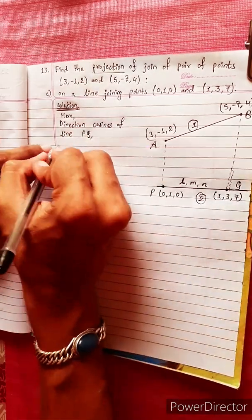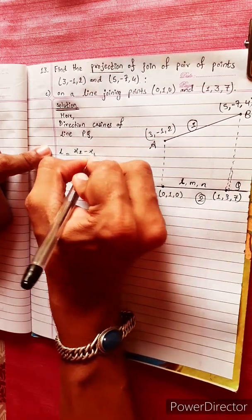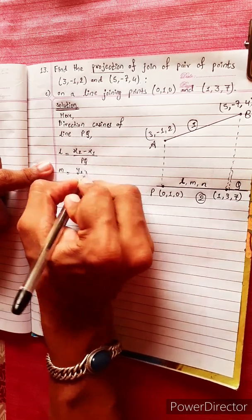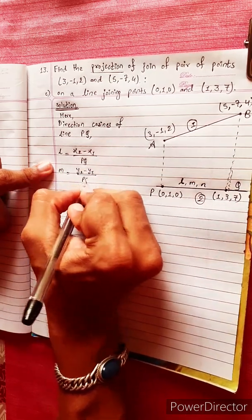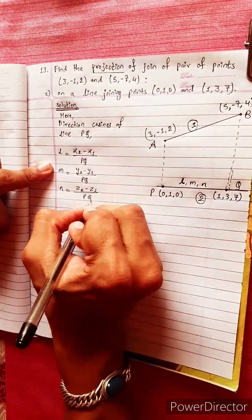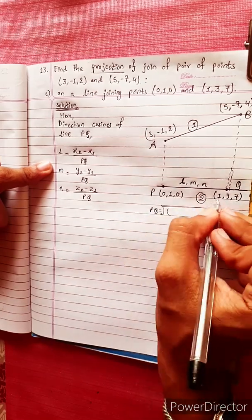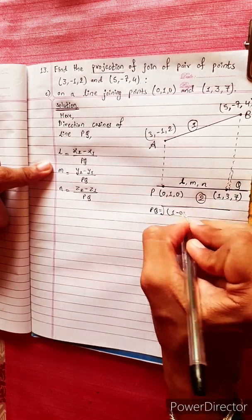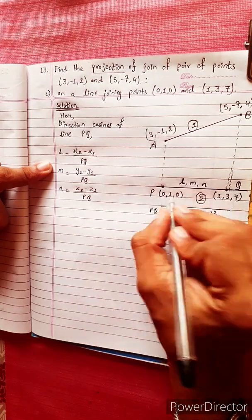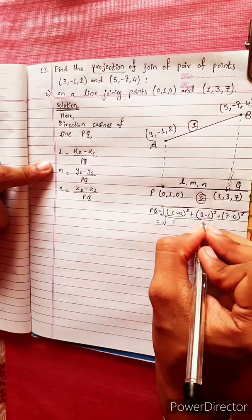PQ is the first thing. L equals x2 minus x1 divided by PQ. M equals y2 minus y1 divided by PQ. N equals z2 minus z1 divided by PQ. PQ is the first thing. Distance formula is x2 minus x1 squared plus y2 minus y1 squared plus z2 minus 0 squared.